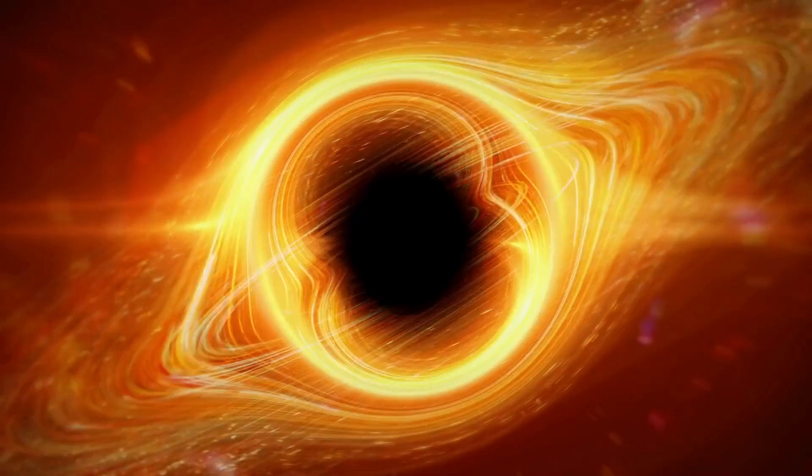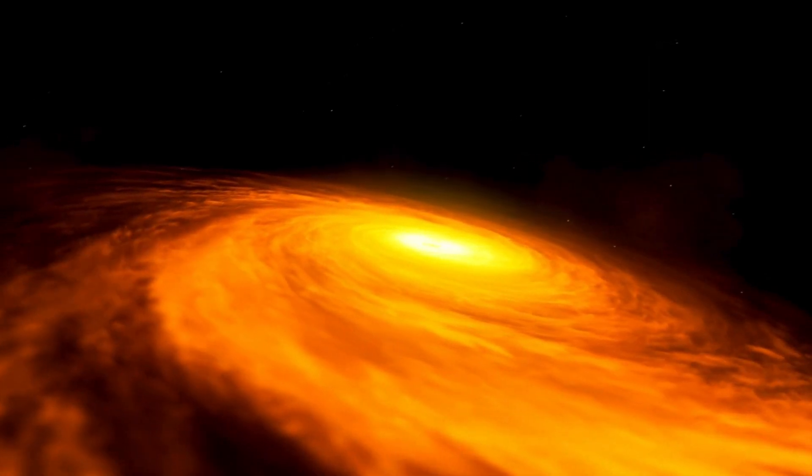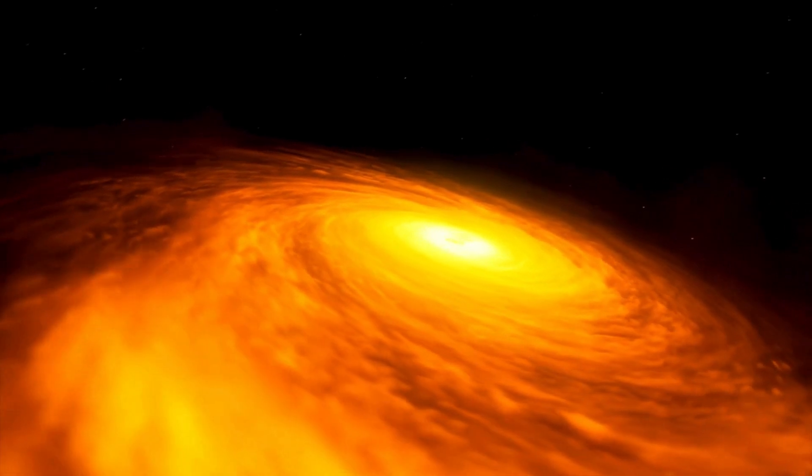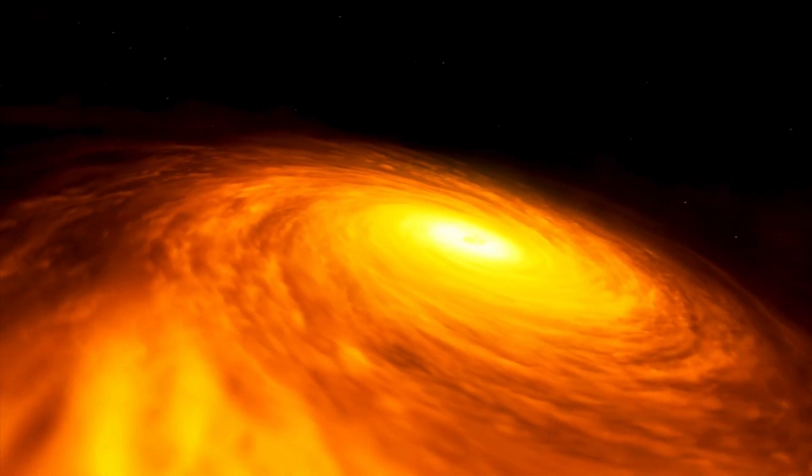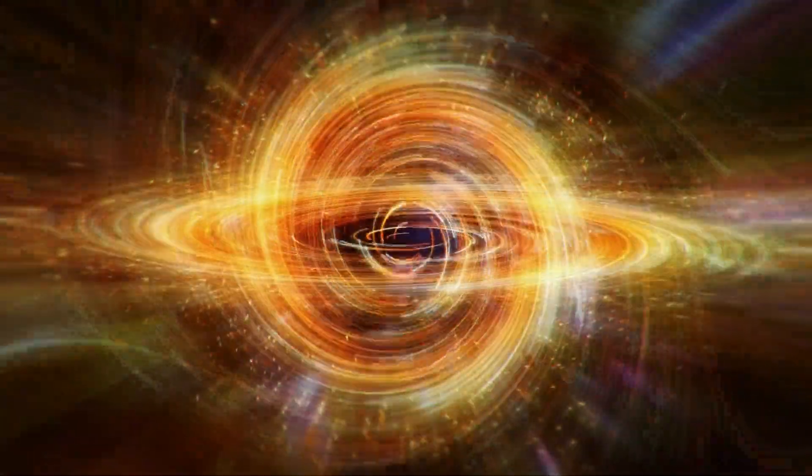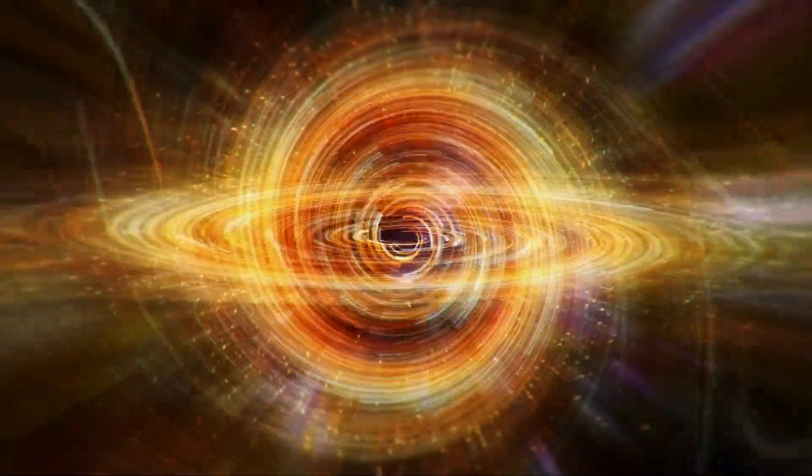Detecting black holes is no easy task, since they don't emit any light. However, scientists have found ways to infer their presence by observing their effects on nearby matter. For example, if a black hole passes through a cloud of interstellar matter, it'll pull that matter towards it in a process called accretion.